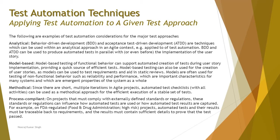The Process Compliant approach is used when an organization follows external standards — for example, in safety-critical systems like aviation products. Projects must comply with externally defined standards or regulations that influence how automated tests are used and how results are captured. For example, in an FDA-regulated project, high-risk automated tests and results must be traceable back to requirements and contain sufficient detail to prove the test passed.